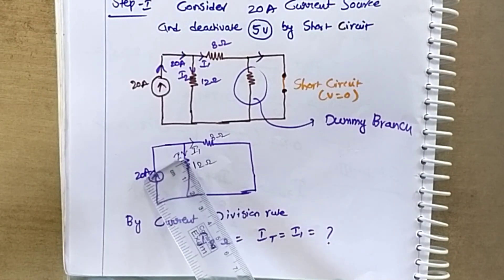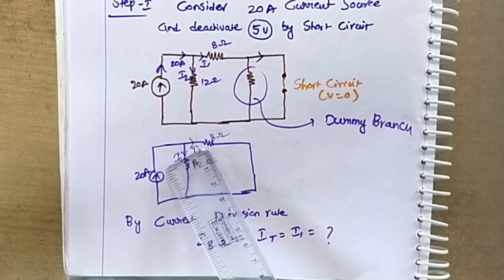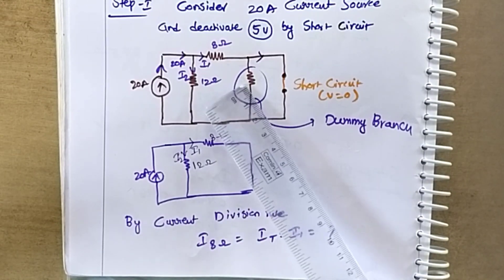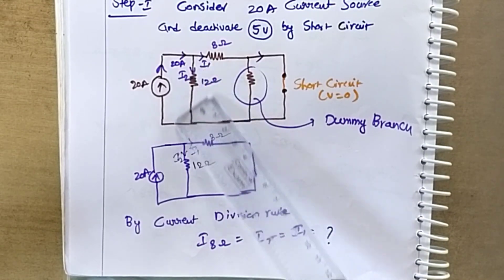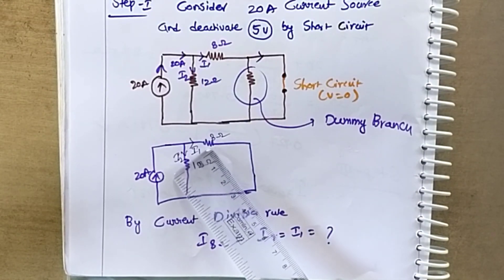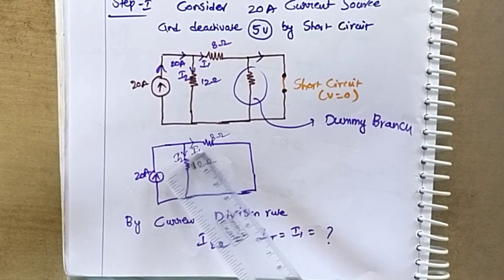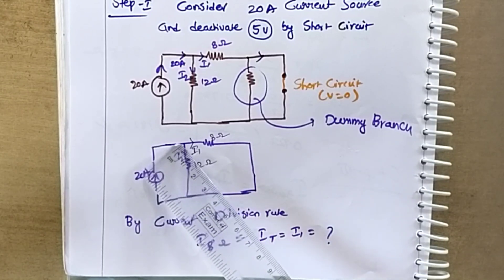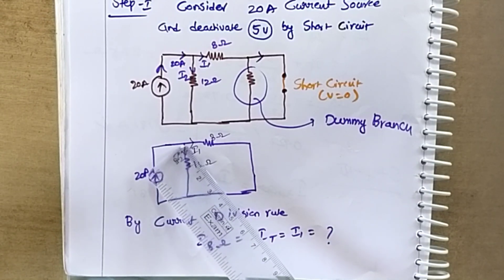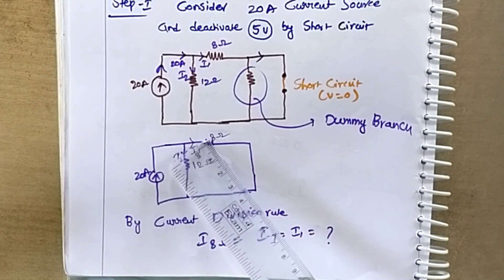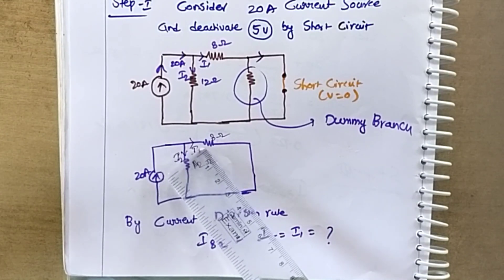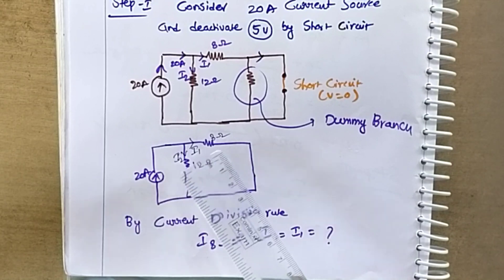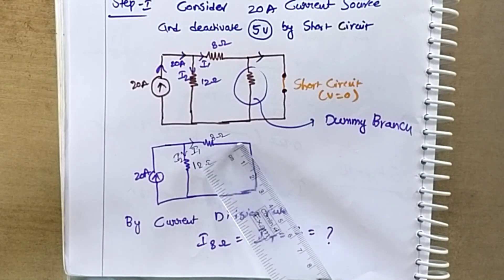After redrawing, the simplified circuit has the 12 ohm and 8 ohm resistances. The 20 amp current flows up to the node and then divides between the 8 ohm and 12 ohm branches. The current through the 8 ohm resistance is i1, which we calculate using the current division rule.